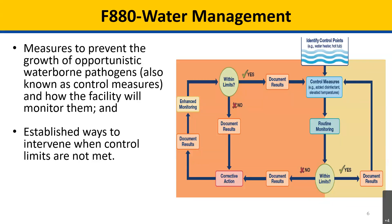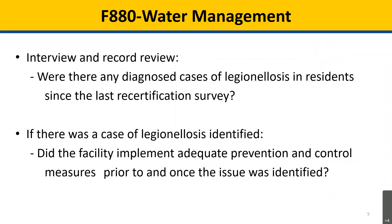Additionally, the facility should have established ways to intervene when their control limits are not met. Through interview with the infection preventionist and record review, surveyors should determine whether the facility has had a resident with legionellosis since the last recertification survey, and what actions the facility took in response. The state survey agency should work with local and state public health authorities, if possible, to determine if the water management was inadequate to prevent the growth of Legionella or other opportunistic waterborne pathogens, and whether the facility implemented adequate prevention and control measures once the issue was identified.